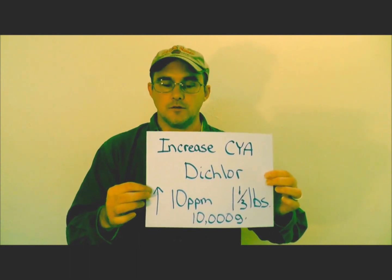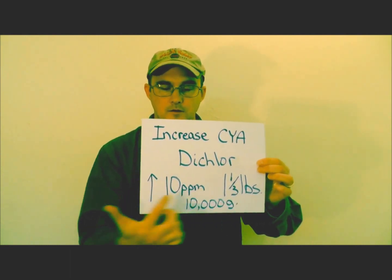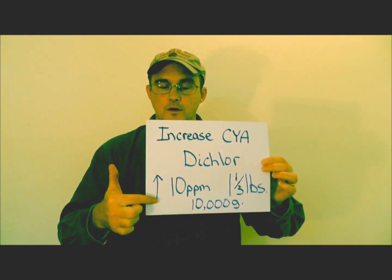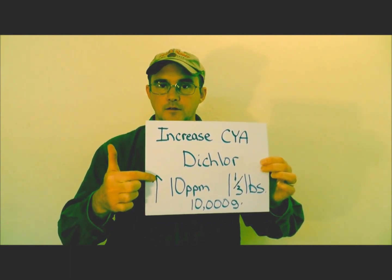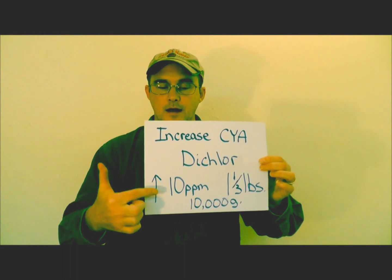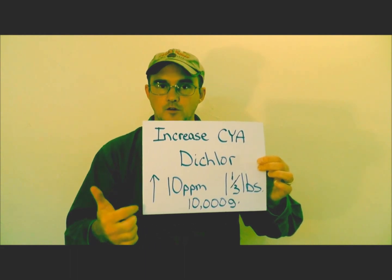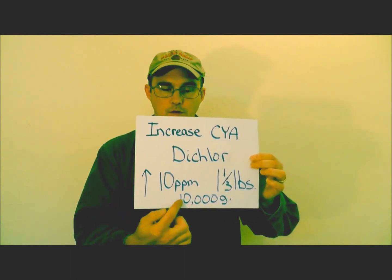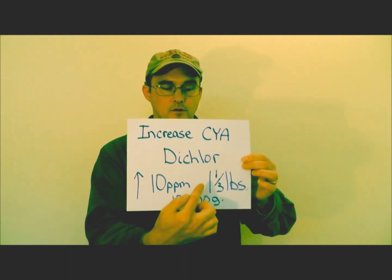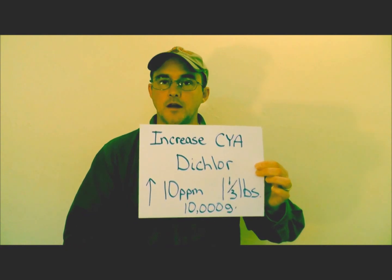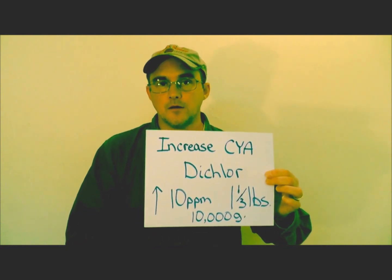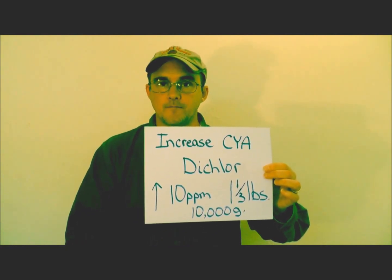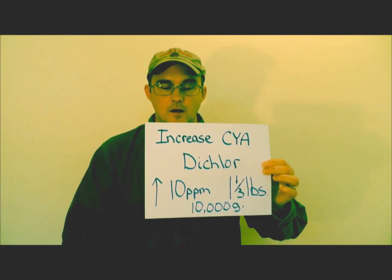How much do you use? Right here: if you want to increase your cyanuric acid by 10 parts per million per 10,000 gallons, you use 1 and 1/3 pounds of dichlor.